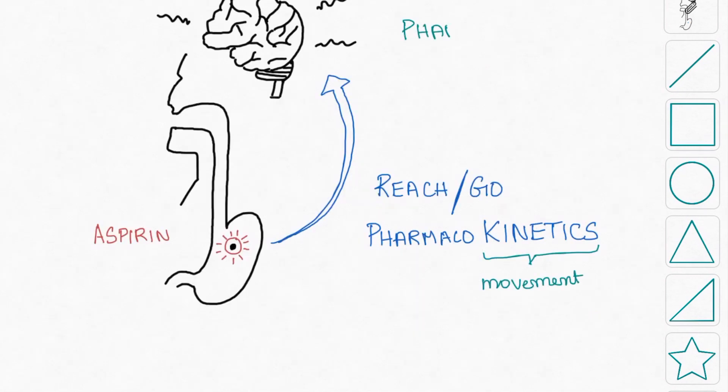The aspect of aspirin performing an action in the target organ is studied under pharmacodynamics. Dynamics refer to the reaction. So essentially, pharmacokinetics encompasses what the body does to aspirin, while pharmacodynamics encompasses what aspirin does to the body.